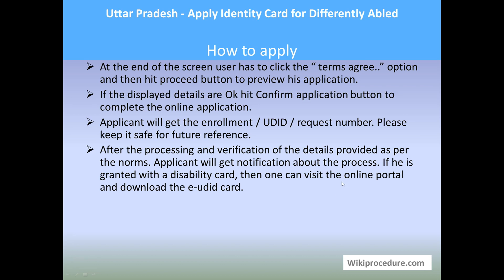After processing and verification of the details as per the norms, the applicant will get a notification about the status and availability of the disability card. The applicant can then visit the online portal and download the e-UDID card using the respective options. This is how you apply for the differently abled card through online.